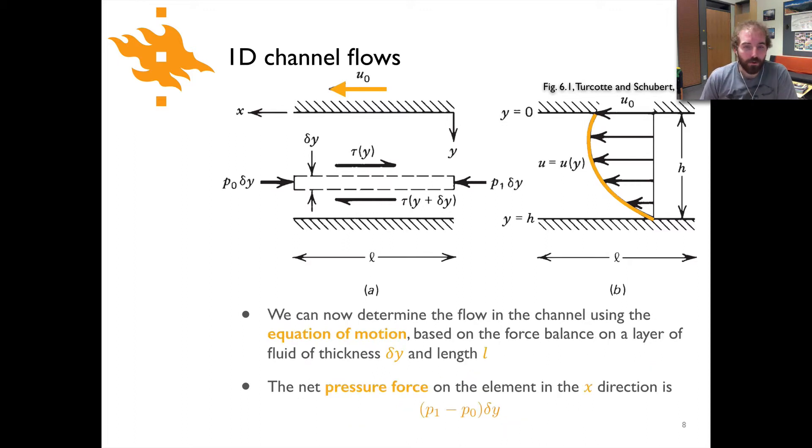If we want to talk about how this fluid is going to flow within the channel, we're going to use the equation of motion that'll allow us to calculate the velocity within the channel. That equation of motion is going to be based on the balance of forces of a layer of thickness delta y and length l. That's this little box that's shown here and so in this box we can consider the forces that are acting on the fluid.